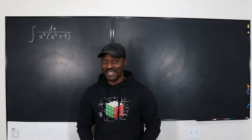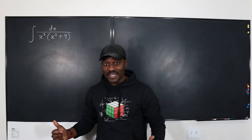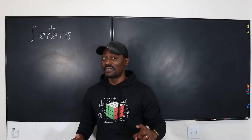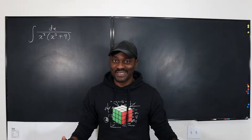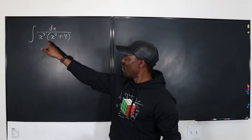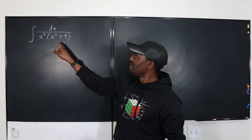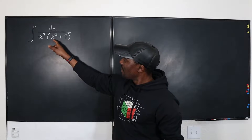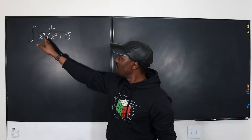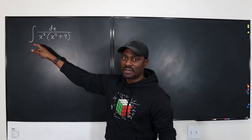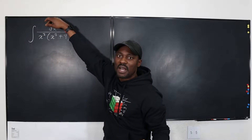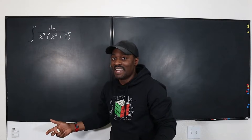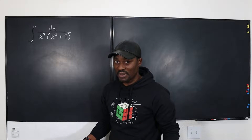Hello and welcome to another video. This is another integration problem, and u-substitution will not work, because if I take the more complex one and take the derivative of x squared plus 9, I'm going to get 2x. But this is not 2x, this is x squared, and there is no 2x on top. So there's nothing I could do with the derivative that I'm going to get. So I know u-substitution is not going to work.